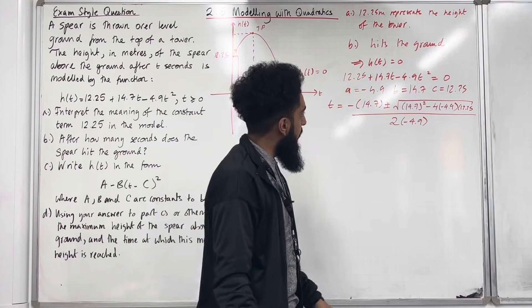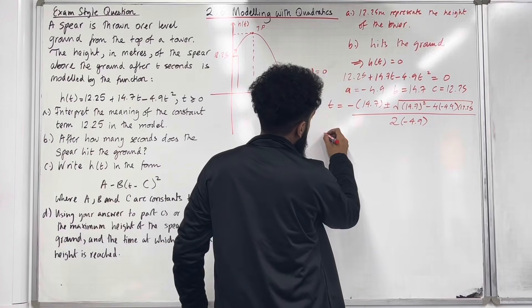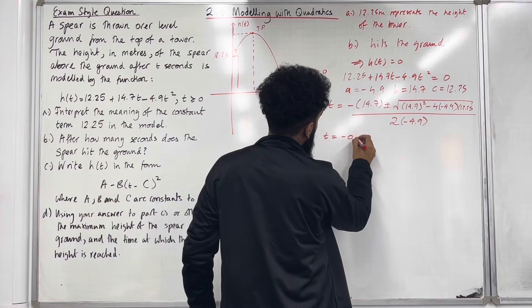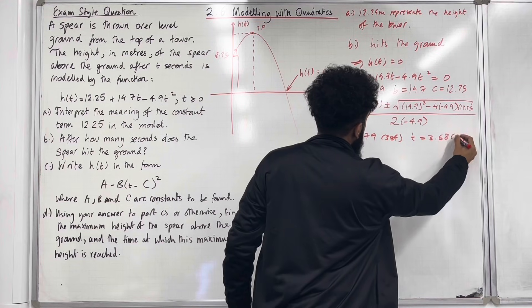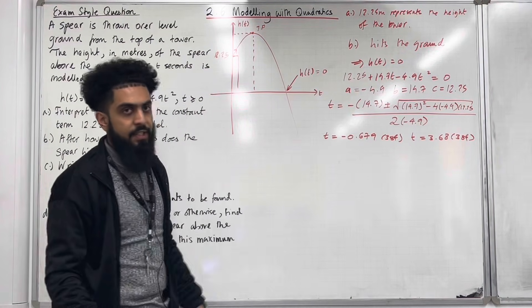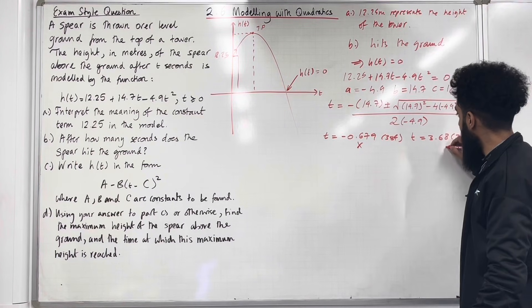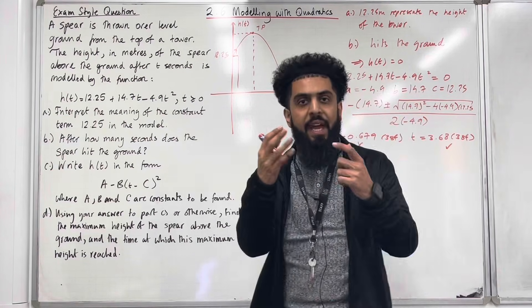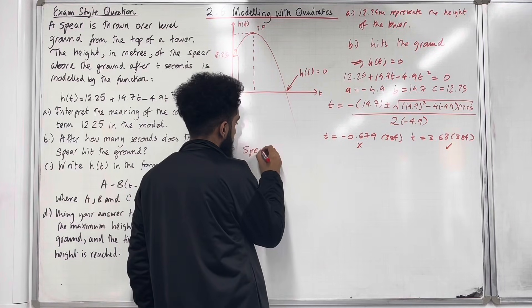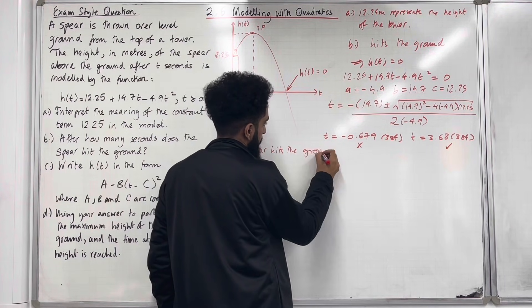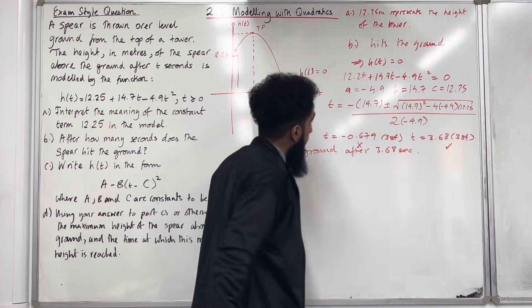That is the quadratic formula. Now I can put this into my calculator and round off to for example 3 significant figures. So if I round to 3 significant figures I end up with t = -0.679 3SF, t = 3.68 3SF. The time is in seconds. Now because time can't be negative we need to reject this negative solution. We take this time over here. So the spear hits the ground after 3.68 seconds. That completes part B.